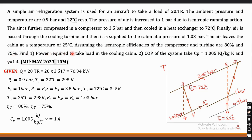Find: (1) power required to take a load in a cooling cabin, and (2) COP of the system. To find this, we take CP as 1.005 kJ/kg·K and gamma as 1.4. This question was asked for 10 marks in Mumbai University May 2023 paper.